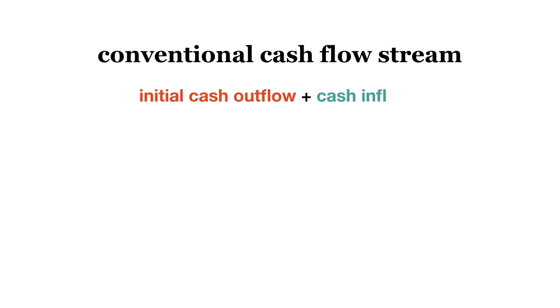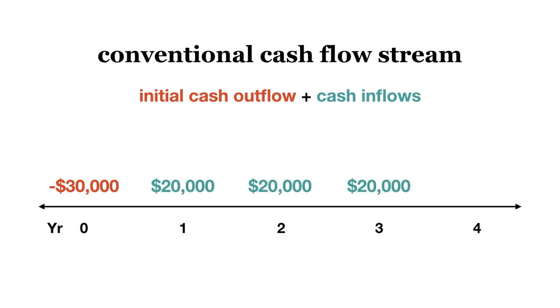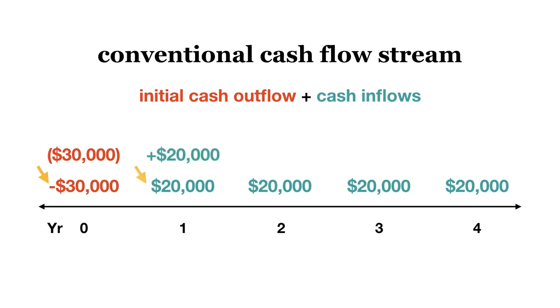Conventional cash flow stream: this type of cash flow stream consists of an initial cash outflow followed by a series of inflows. For example, a company may invest $30,000 into a project initially but receives $20,000 a year for four years, one year after the initial investment. You may also notice sign conventions here. We can identify a cash outflow in two ways: there will be a negative sign in front of the number, or the number will be in parentheses. We can identify cash inflows by either a positive sign or no sign in front of the cash flow.